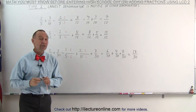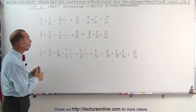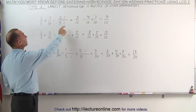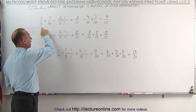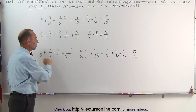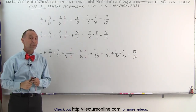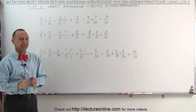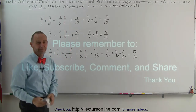And that's how we change the denominators so they can all be the same. If the largest of the denominators is a multiple of all the other denominators, we can simply use that as the lowest common denominator. And that's how it's done. Thank you.